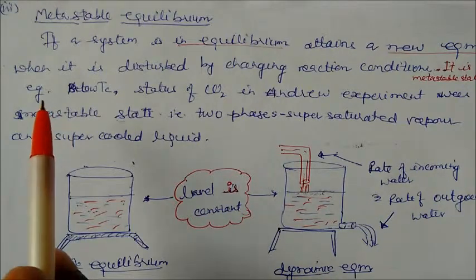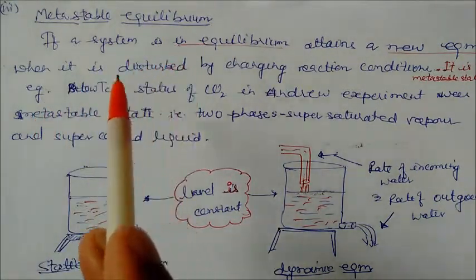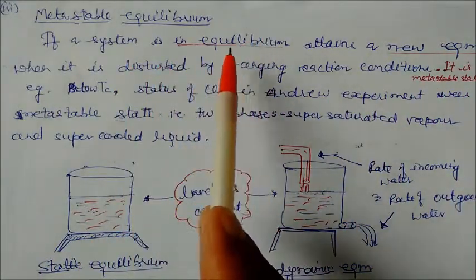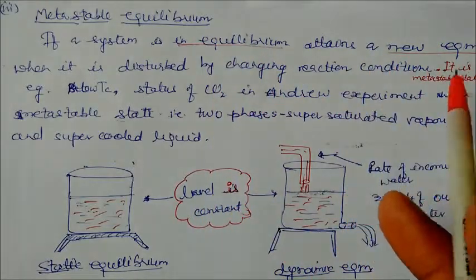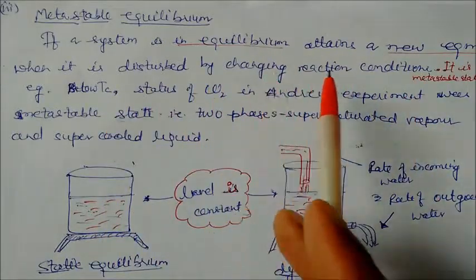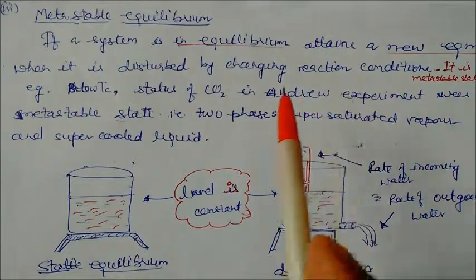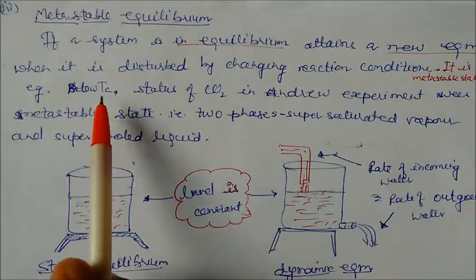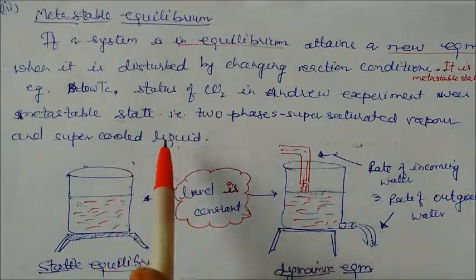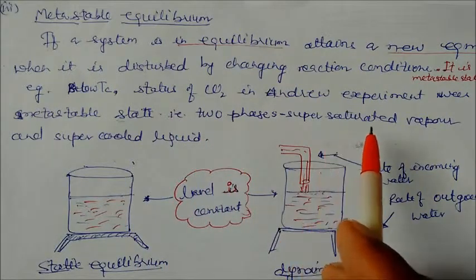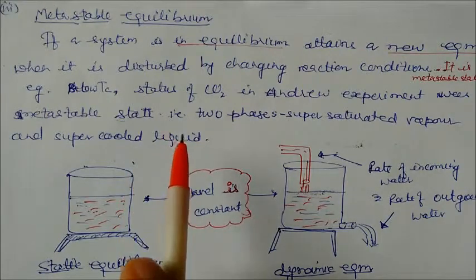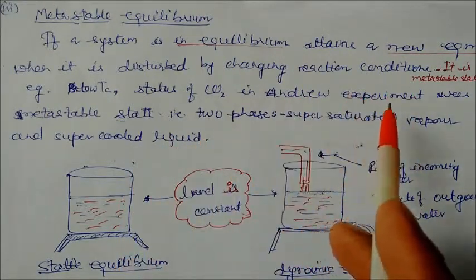The third type is called metastable equilibrium. If a system in equilibrium attains a new equilibrium after being disturbed by changing reaction conditions, that state is called metastable. As we have already seen, after the critical temperature, the state of carbon dioxide in an experiment was a metastable state — holding two states such as supersaturated vapor or supercooled states. That was the metastable equilibrium state.